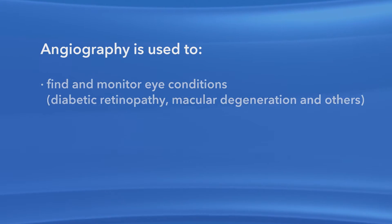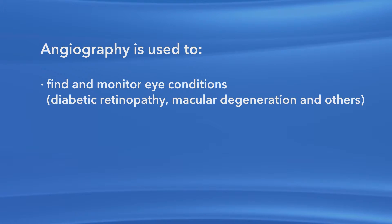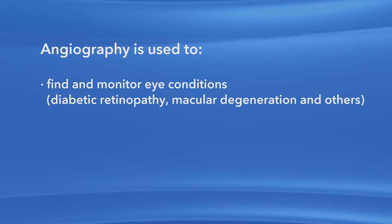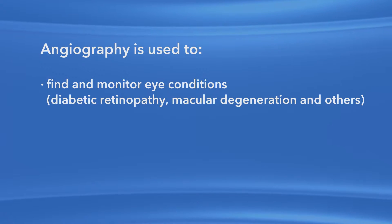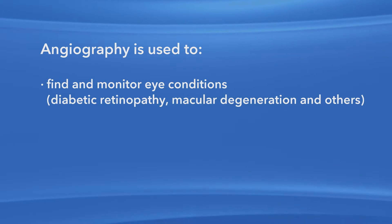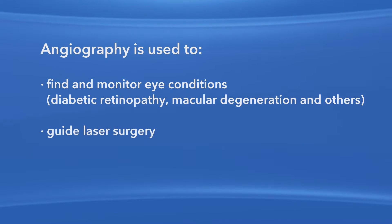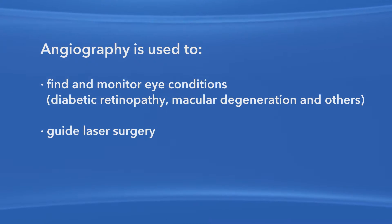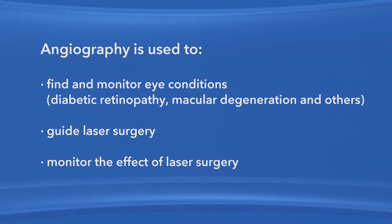Ophthalmologists use angiography to help diagnose and monitor certain eye conditions, such as diabetic retinopathy and macular degeneration, among others. Also, if you're going to have laser surgery on your retina, your ophthalmologist may use angiography to help guide the laser with pinpoint accuracy. After laser surgery, angiography may be used to help monitor the effect of the laser procedure.